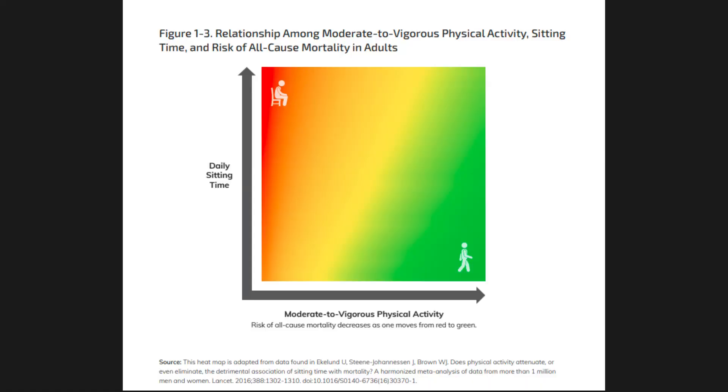Today we are going to be talking about why putting activity into these four different groups is important and how they actually interact with our health. In the activity guidelines, there is a graph that shows the interactions between these four different types of activity and how they relate to what we call all-cause mortality.